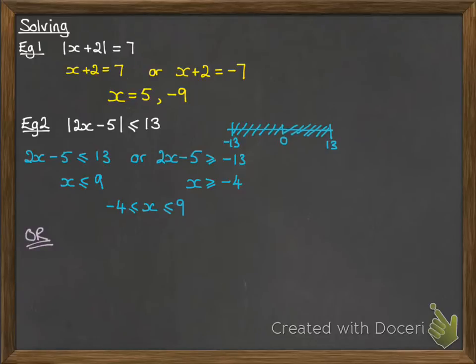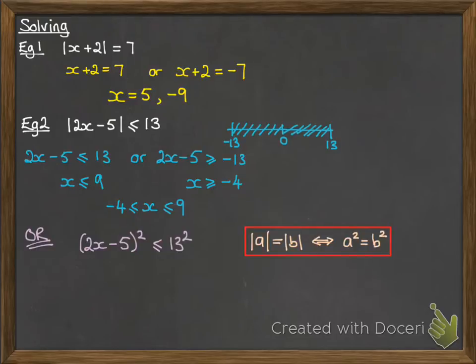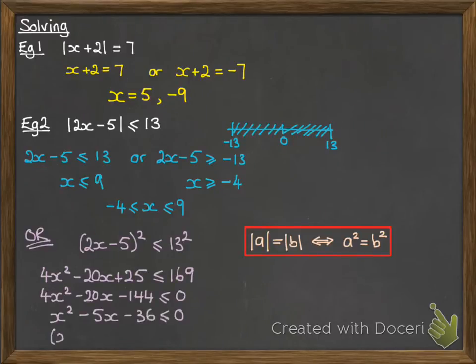There's another way to do this that helps with not needing to think about that number line so much. We can use this result, that (2x minus 5) squared is less than or equal to 13 squared. That uses this result, that if the modulus of a is equal to the modulus of b, then a squared is equal to b squared. So we're using that just in an inequality. So if you follow through the algebra there, you get 4x squared minus 20x plus 25 is less than 169. We continue through with that working out, and we get those critical values, (x minus 9)(x plus 4) is less than or equal to 0.